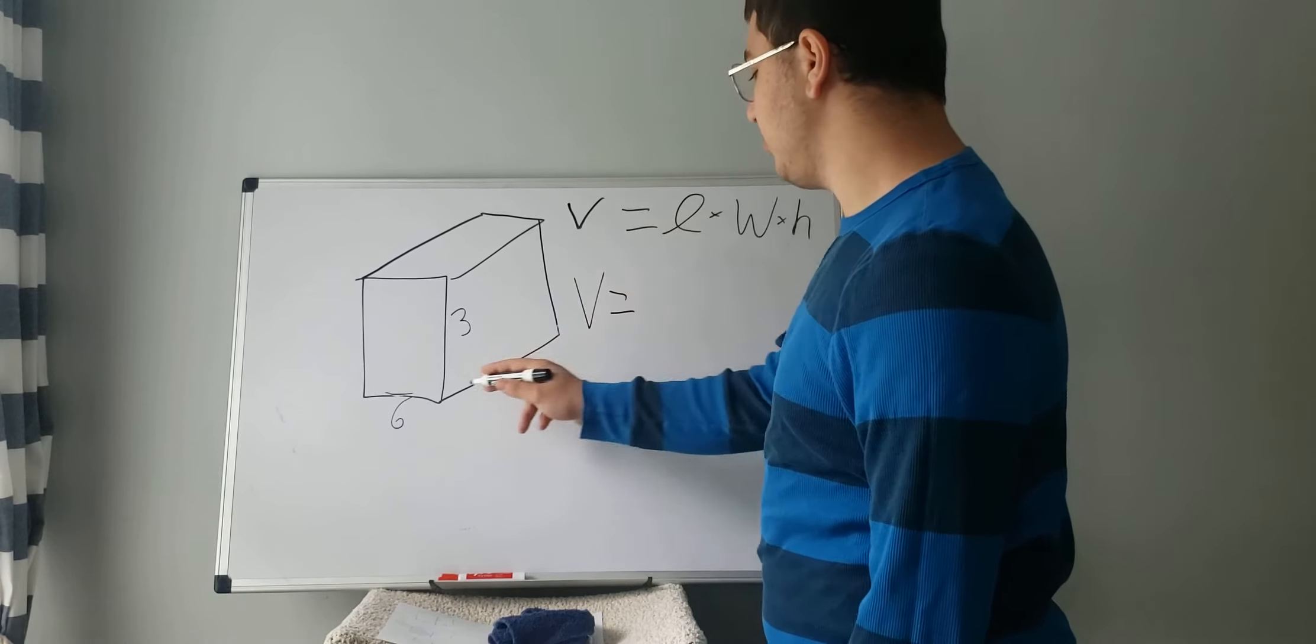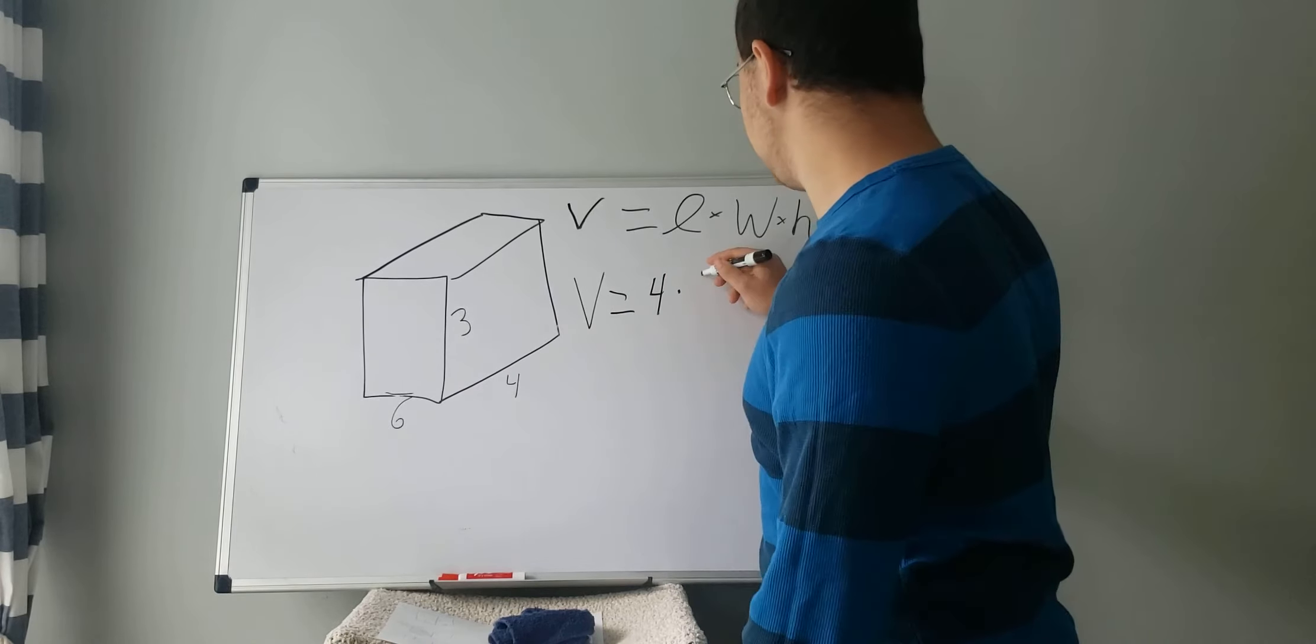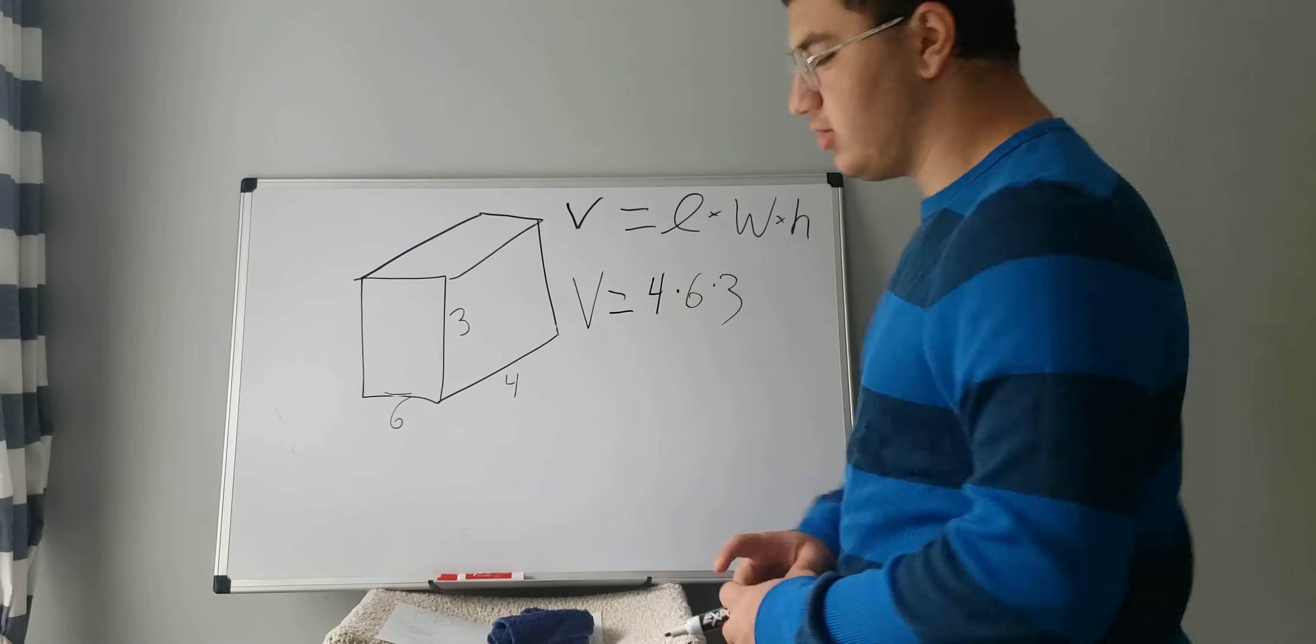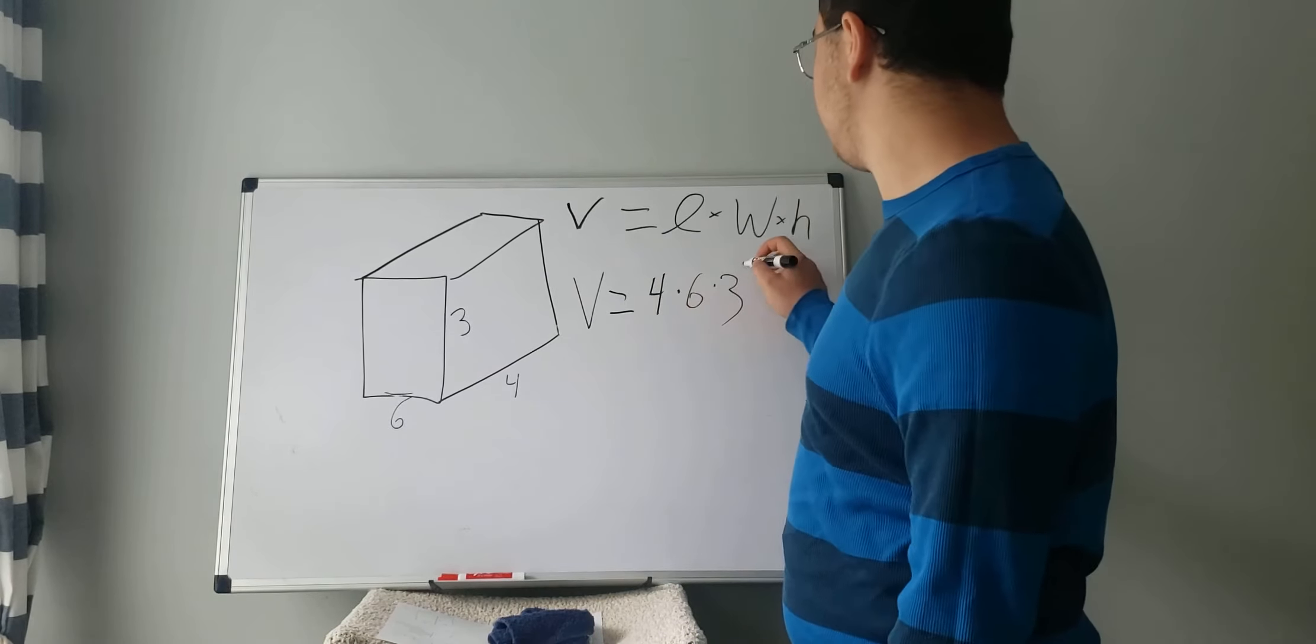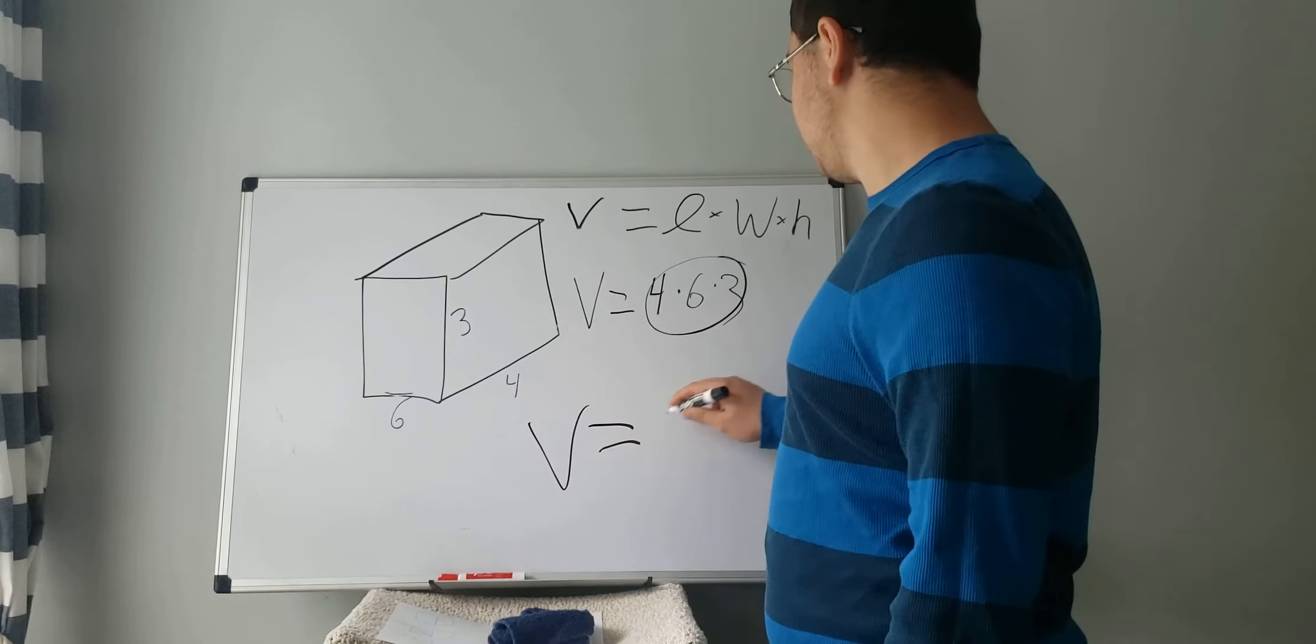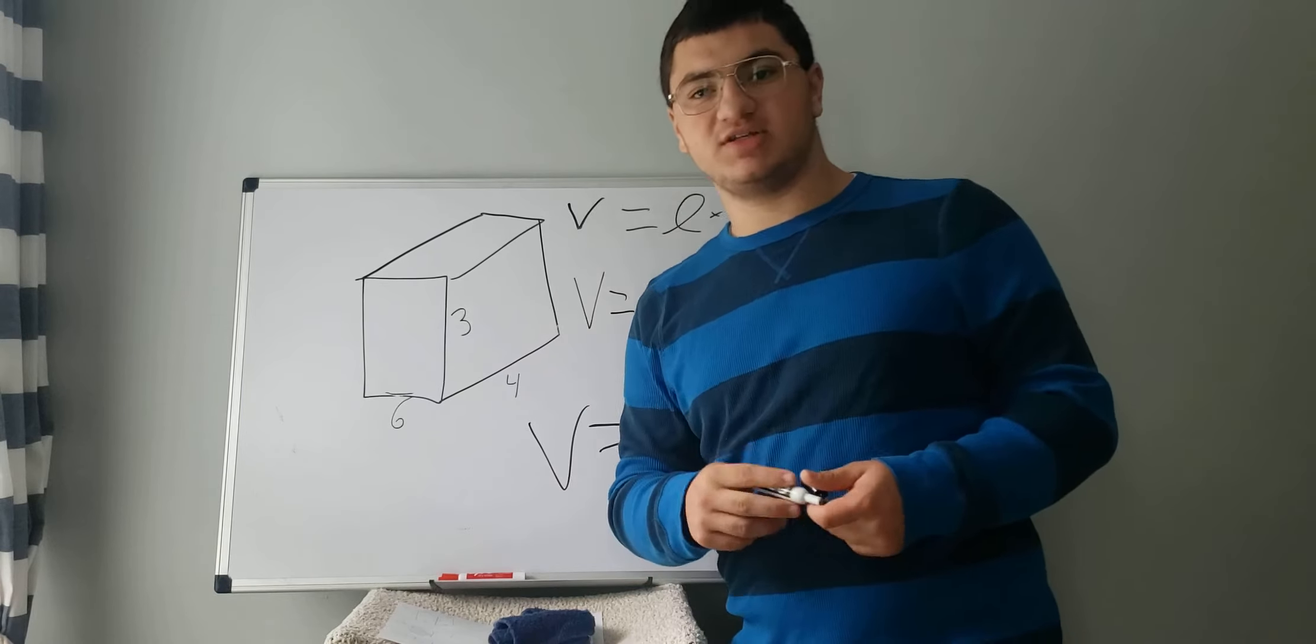So volume equals our length, 4, times the width, 6, times the height, 3. Okay, guys, so we get an answer of 72 once we multiply all of these together. And our volume equals 72. Okay, let's move on to the next example.